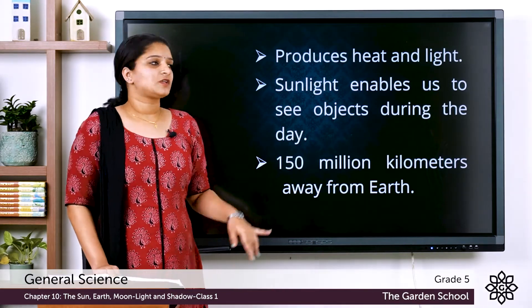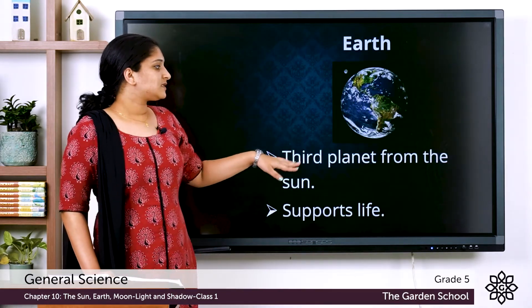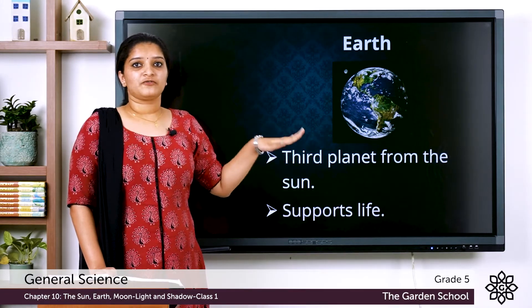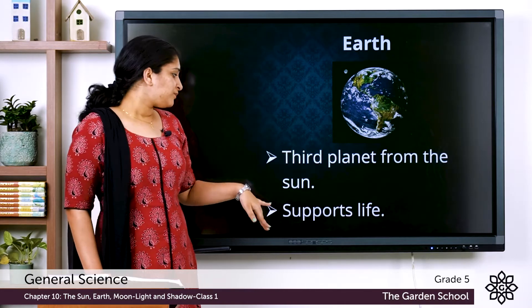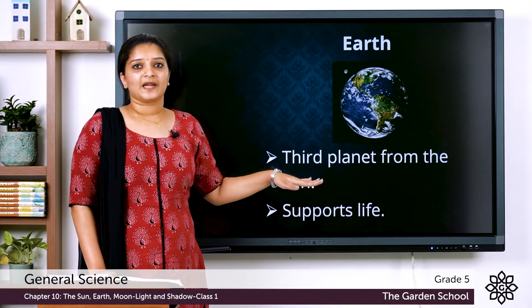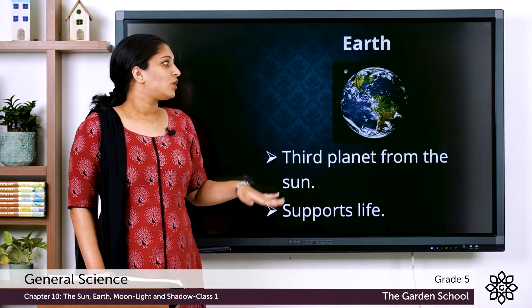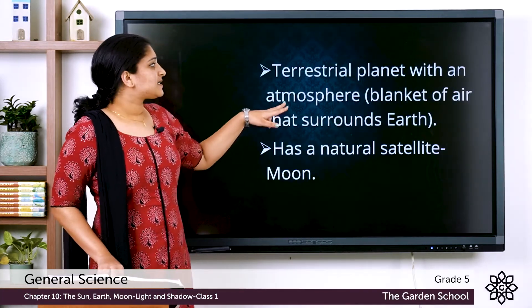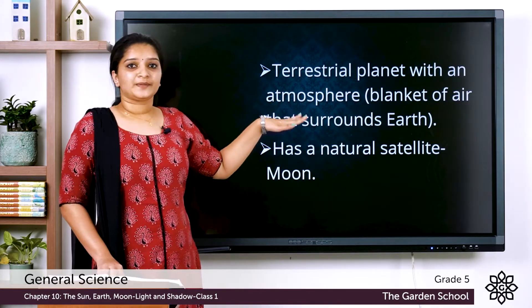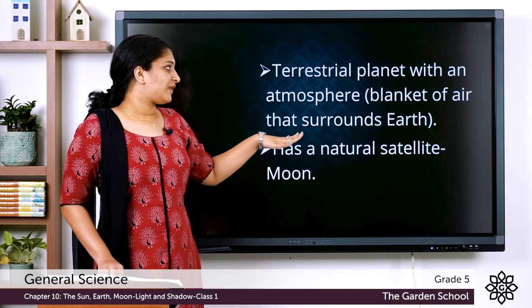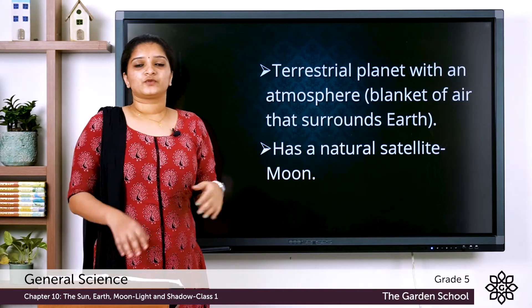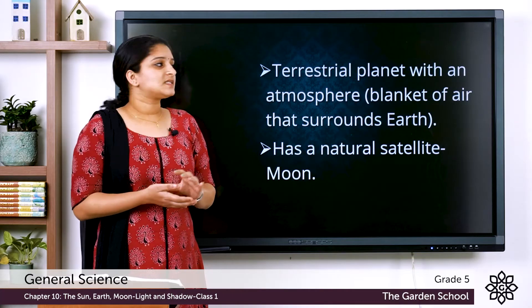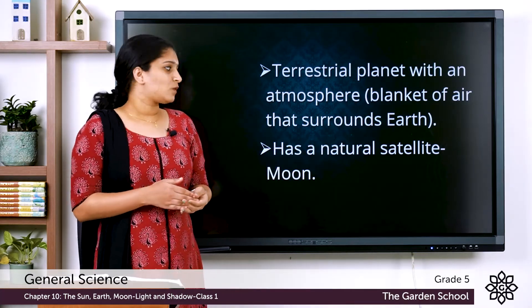Now let's get to know about our planet earth. Earth is the third planet from the sun, which means earth lies at the third position from the sun when planets are arranged in their order, and it is the only planet known to support life. It is a terrestrial planet with an atmosphere, which means a blanket of air that surrounds earth.